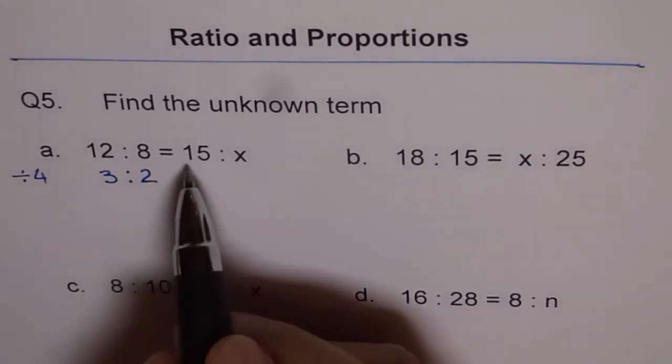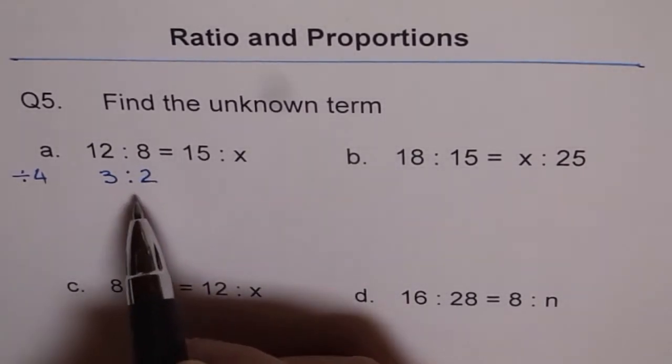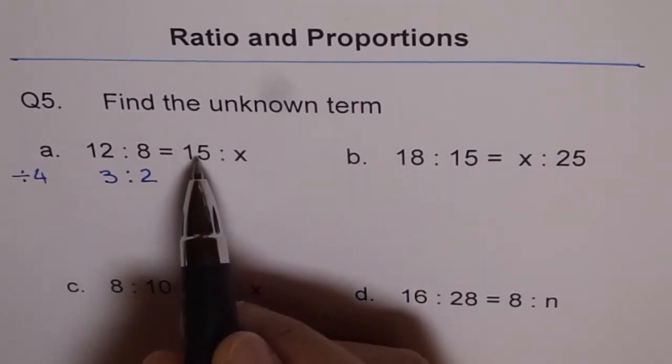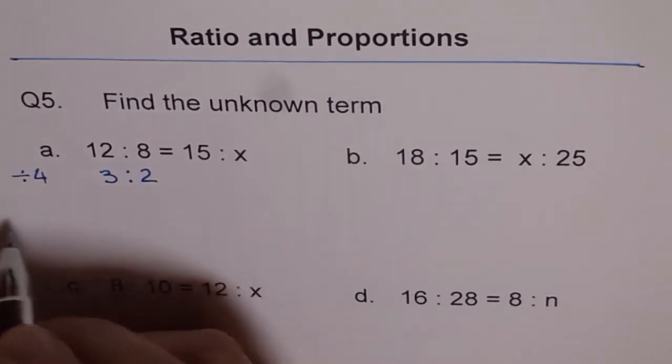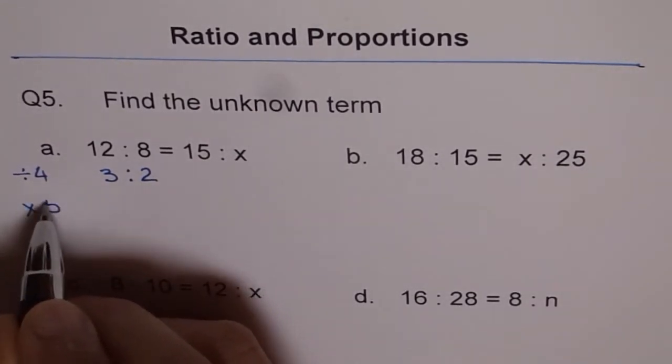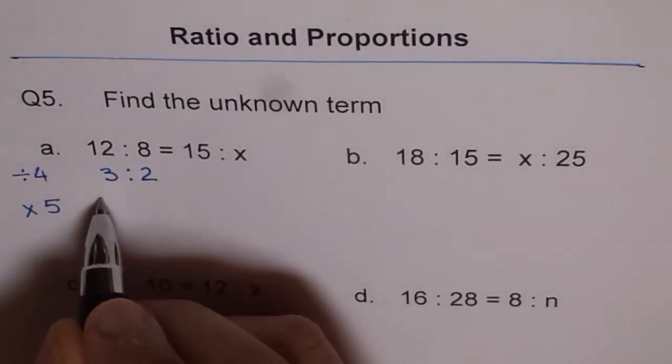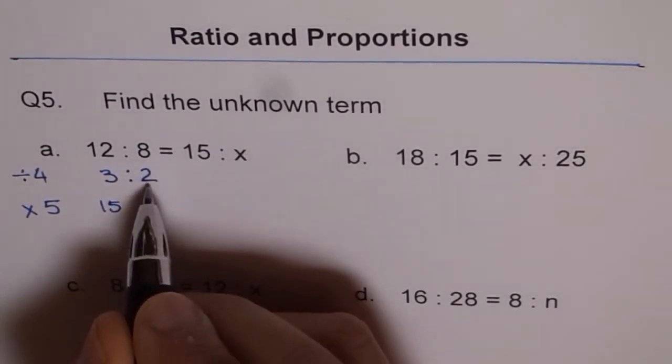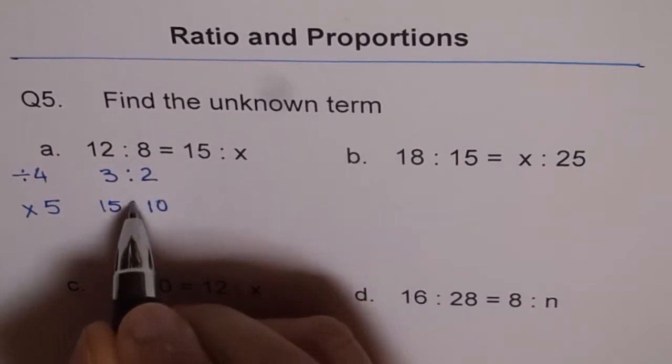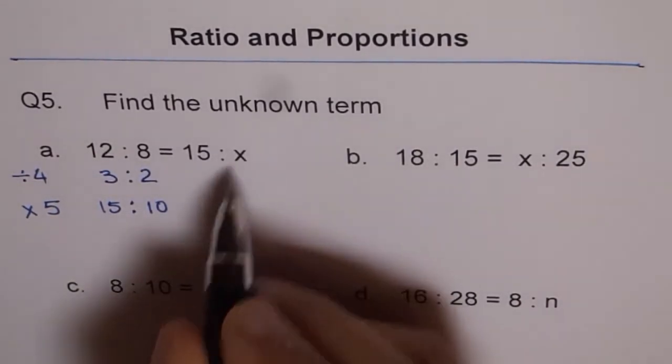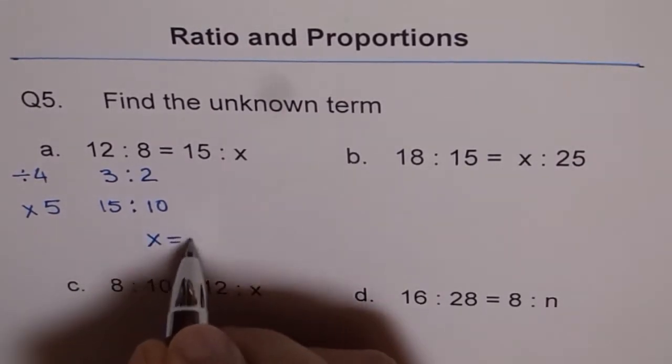Now you can find a scale factor between left and right side. Now 3 times 5 is 15. So the scale factor is times 5. If I do 3 times 5, I get 15 here and 2 times 5 is 10. So that is how we can get X, and therefore X equals 10.